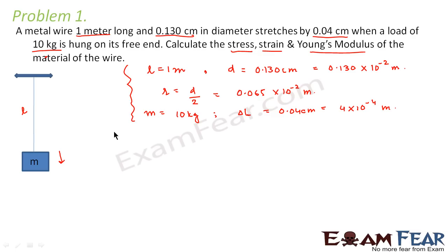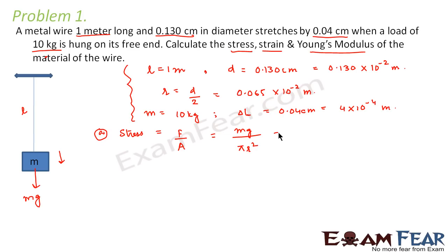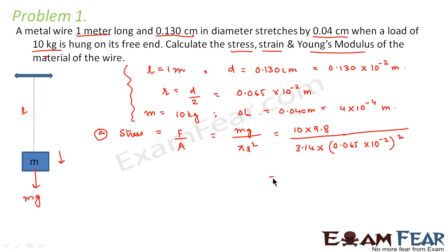First, let us calculate stress. Stress is force per unit area, that is force divided by area. The force here is mg due to the weight of the mass, and the area is the cross-sectional area of the wire, which is π r². With m = 10, g = 9.8, π = 3.14, and r = 0.065 × 10⁻² meters, the stress comes out to be 7.38 × 10⁷ Newton per meter square, or Pascal.